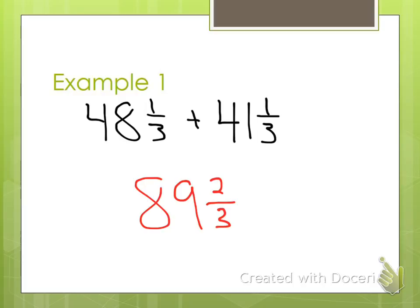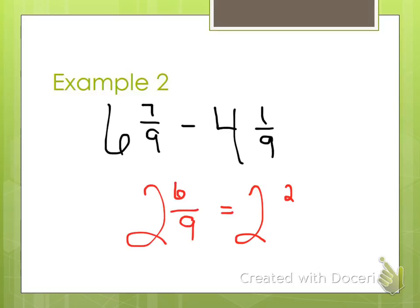Example 2, now I'm subtracting with common denominators. 6 and 7 9ths minus 4 and 1 9th. So 6 minus 4, I subtract my whole numbers. 7 minus 1 is 6 and reduce. 2 and 2 3rds.